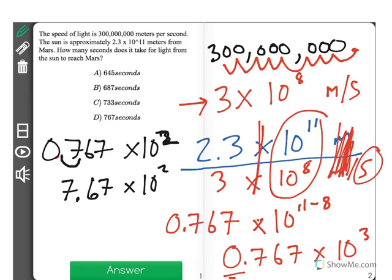Now, none of our answer choices are in scientific notation. So, we're just going to find its total value. When I move, I have 2 here. I'll move it once, twice. I can see that I get an answer of 767 seconds, which is D.